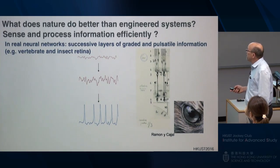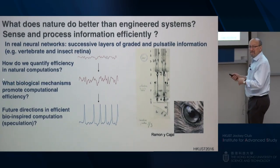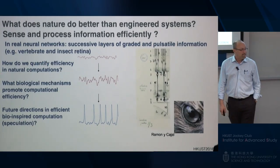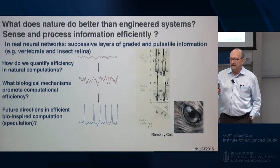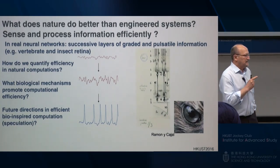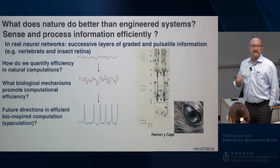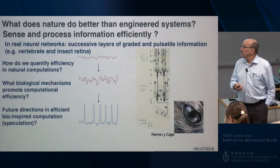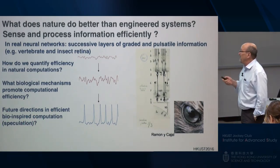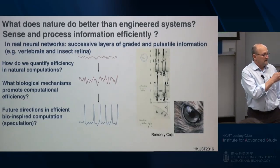Ramón y Cajal, an illustrator from the early 20th century, produced beautiful scientific artwork depicting neural system connections — a beautiful overlay of science and art. The outline for today's talk: how do we quantify the efficiency of natural computations? How do we check the estimate of 10⁴ greater efficiency in natural systems relative to, say, a Dell laptop? What mechanisms do living systems use to promote this efficiency? And what are the future directions in efficient bio-inspired computation?